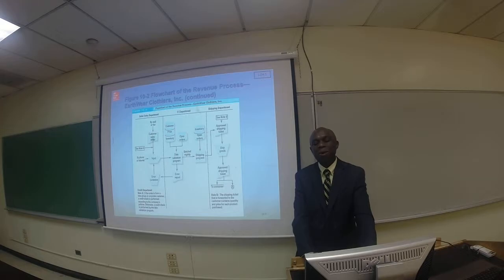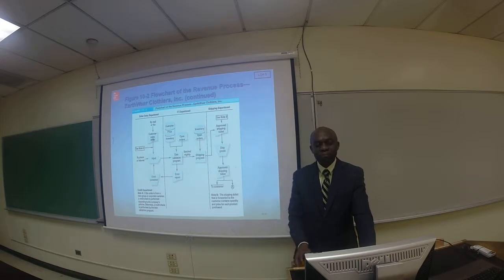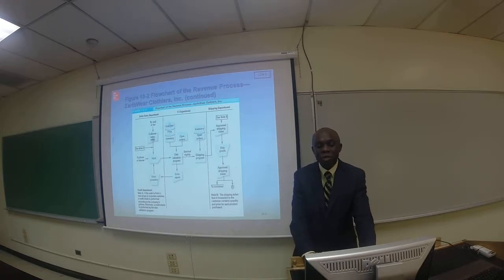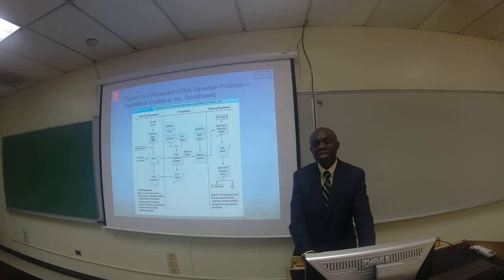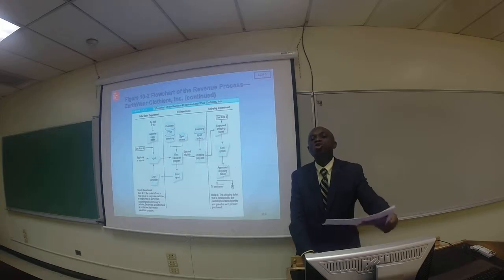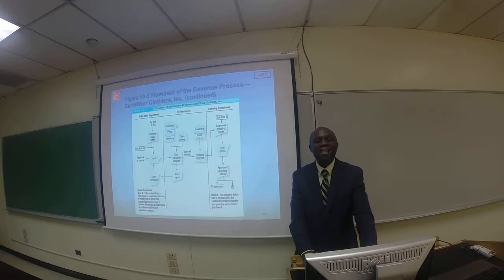When the information gets to the IT department, which is the second column, the system already has the customer's basic information like the price of the product, the customer's name, the address, the type of inventory being ordered, and so forth. Still in the IT department, there are open orders — those are orders that have not yet been filled or satisfied. The IT department takes into account the default information set for that customer and processes the incoming order.